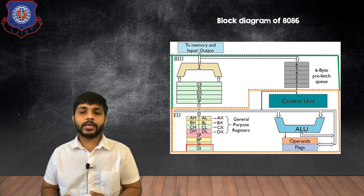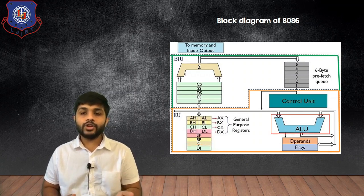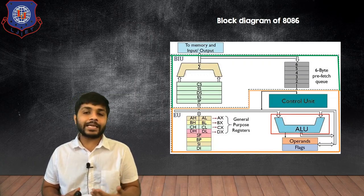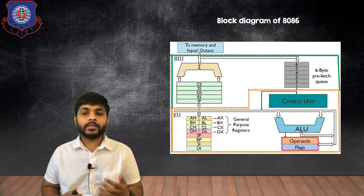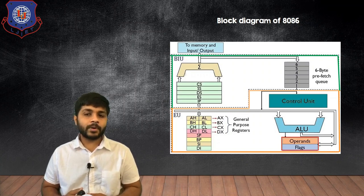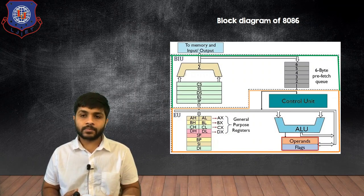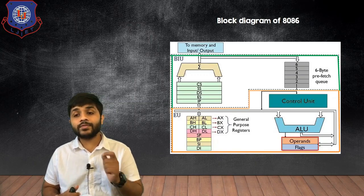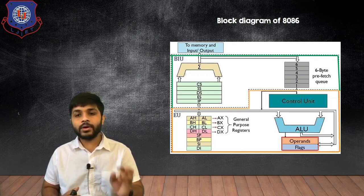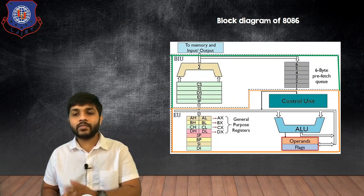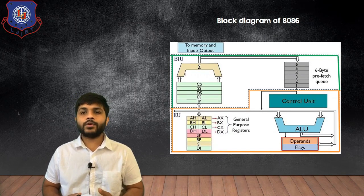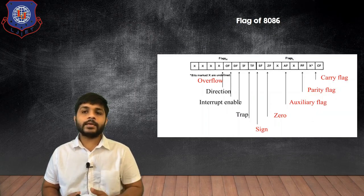The next block is the ALU — Arithmetic and Logical Unit. Using this block, the processor can perform all arithmetic and logical operations. The next part is the operands and flag register. For the 8085 there are five flag bits, but for the 8086 the size of the flag register is 16-bit, though not all bits are used as flags — only a few flags are added to those available in the 8085.